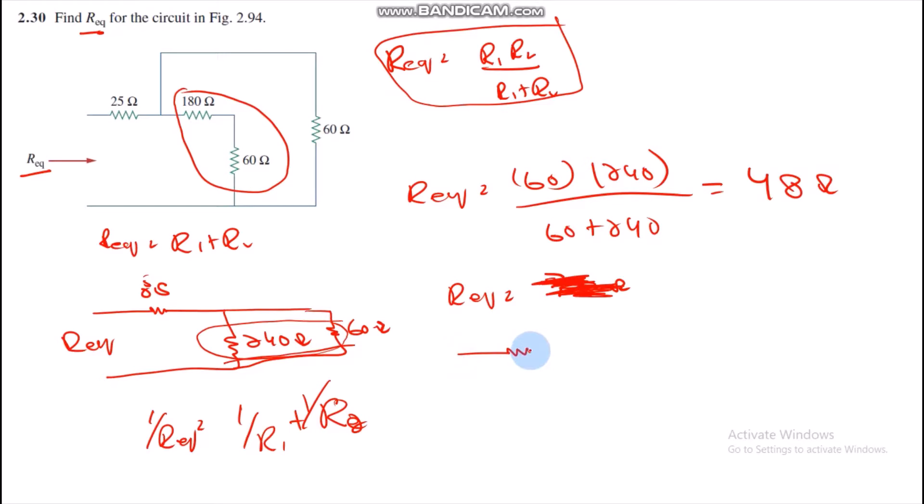This is 25 ohms and then we have here 48 ohms. Now let's find R equivalent. When we solve these two, simply R equivalent equals to 73 ohms.